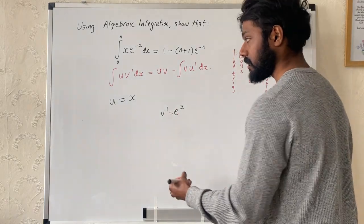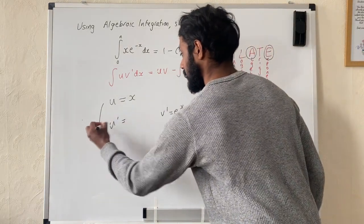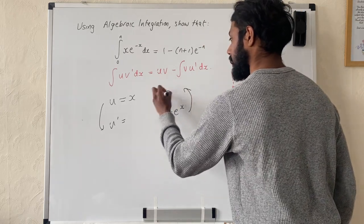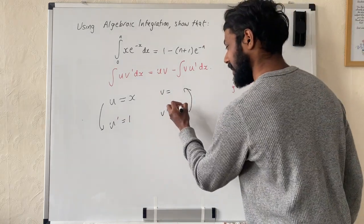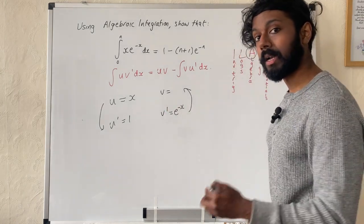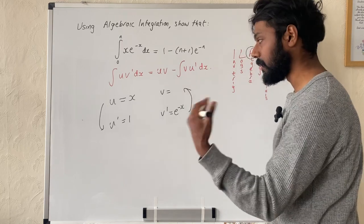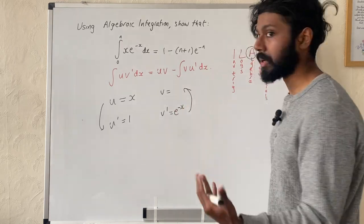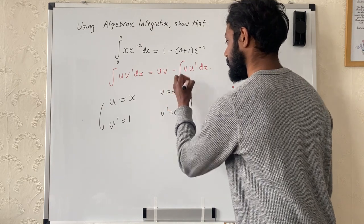Next I'm going to work out u-prime by differentiating, and v by integrating. u-prime is 1. For v, the integral of e to the minus x — I differentiate the power, giving minus 1, and divide by it because it's linear — so v equals minus e to the minus x.